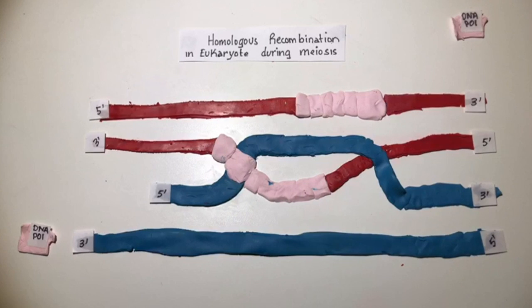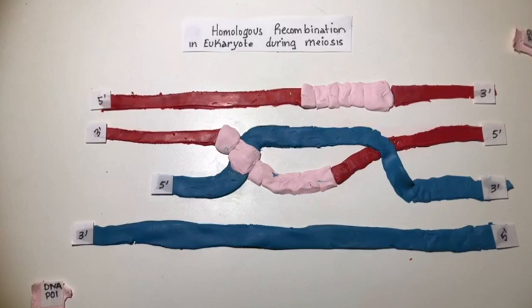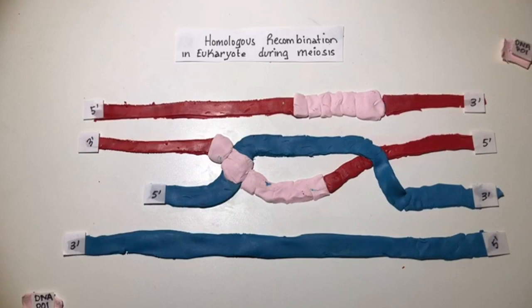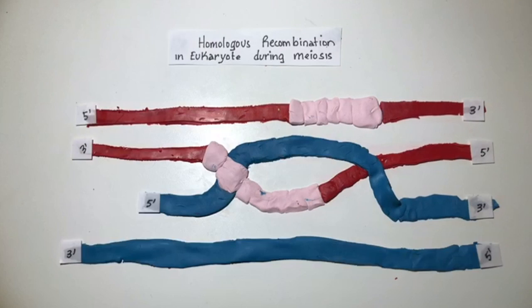In order for recombination to be complete, the Holliday junction must first be resolved and the recombining DNA molecules should be separated.